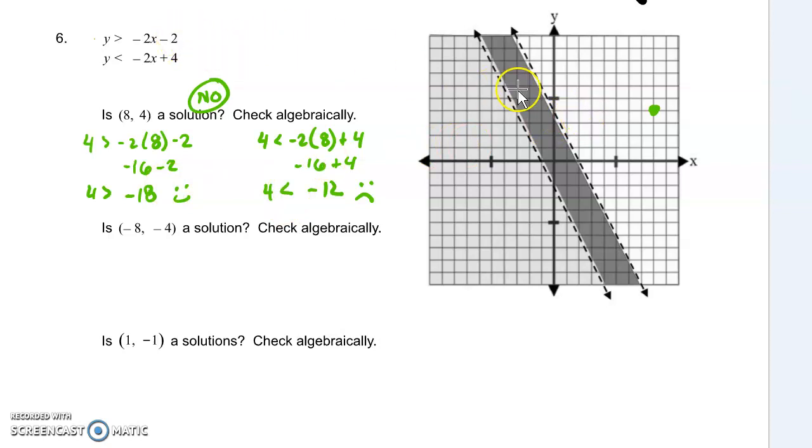You can see it does work for this first one because that's this line, and I'm talking about things greater. It is greater than that line, or it is graphed above that line, but not below the second one.